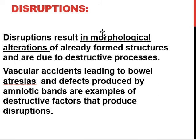The second type is disruptions. Disruptions result in morphological alterations of already formed structures and are due to destructive processes. For example, vascular accidents can lead to bowel atresia — if there is no blood supply, bowel atresia will result. Defects produced by amniotic bands are also examples of destructive factors that produce disruptions.